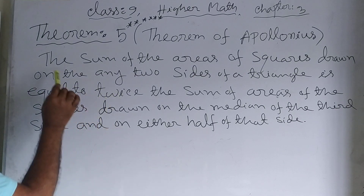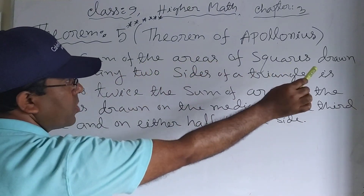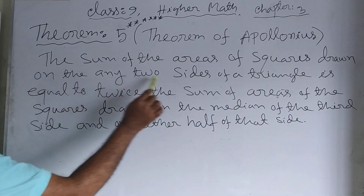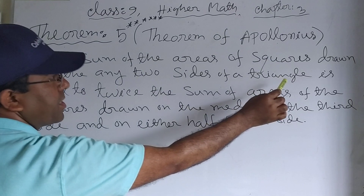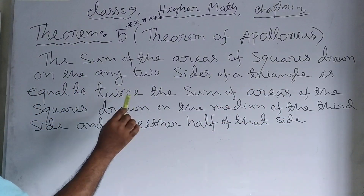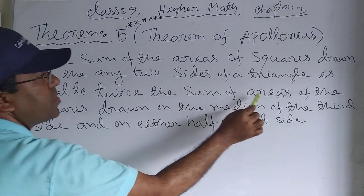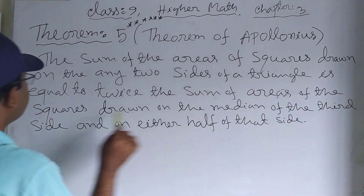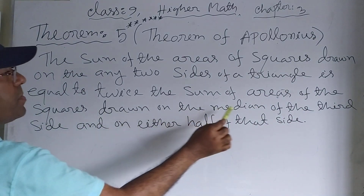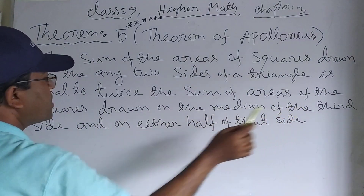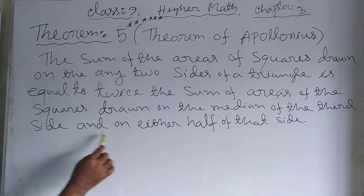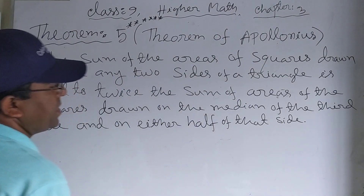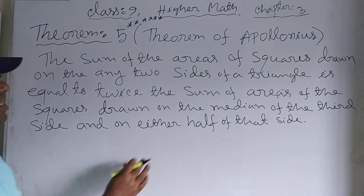The theorem states: the sum of the areas of squares drawn on any two sides of a triangle is equal to twice the sum of the areas of the squares drawn on the median of the third side and on either half of that side.